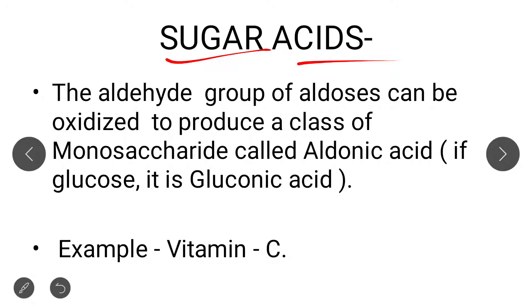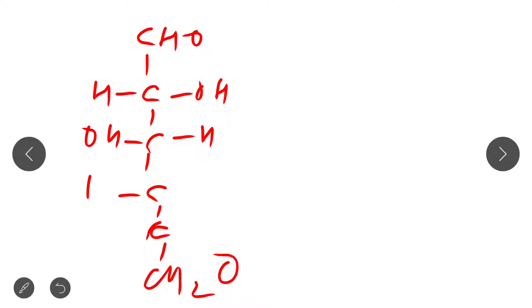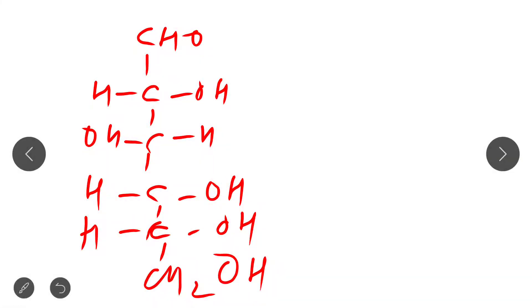The second derivative is sugar acid. Looking at the linear structure of glucose — carbons 1 through 6, with an aldehyde group at C1 — when this aldehyde group is oxidized, it produces a class of monosaccharides known as aldonic acid. We know that when an aldehyde is oxidized, it forms a carboxylic acid (COOH). So if the molecule is glucose and the aldehyde group is oxidized, glucose is converted into gluconic acid — this is a sugar acid.